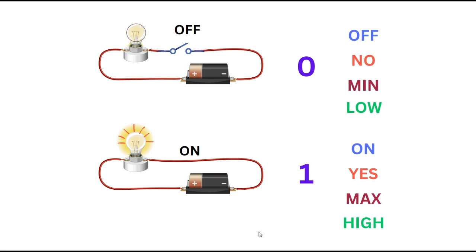Electronic systems, especially semiconductor digital microchips, communicate with two states — zero and one. These two states aren't necessarily called zero and one; we can call them off-state and on-state, min and max, low and high, no and yes, zero and one. The important thing is there are two discrete states — on and off — which can be easily created using electronics, and that is why it is very significant to understand the binary number system.